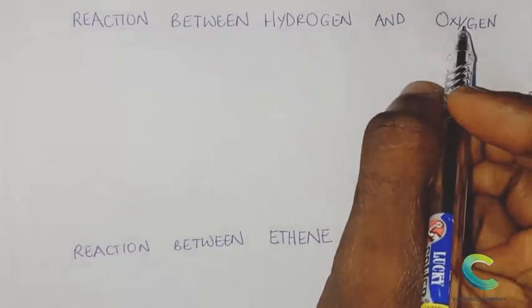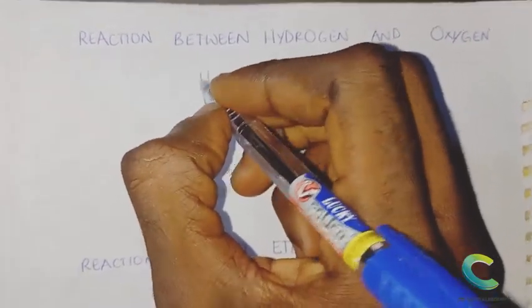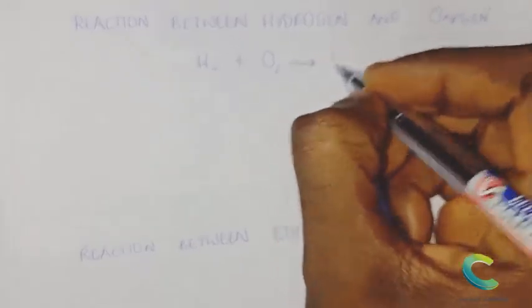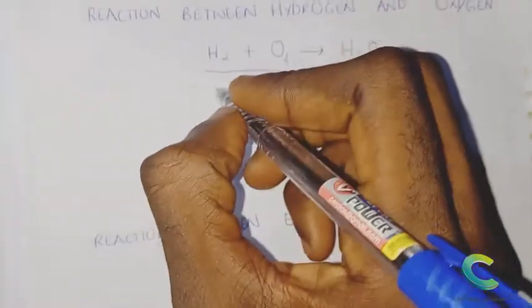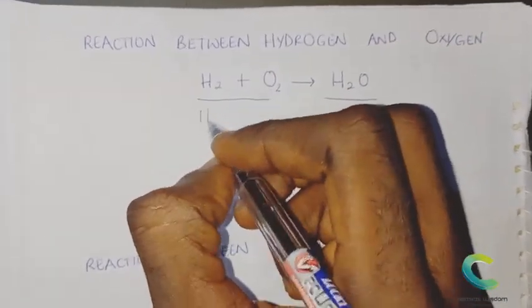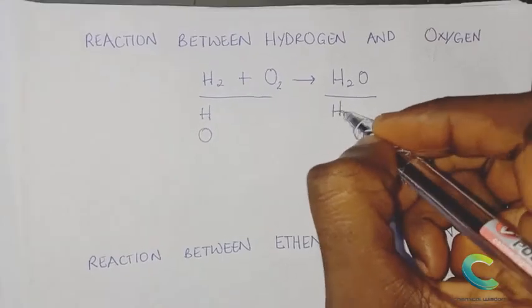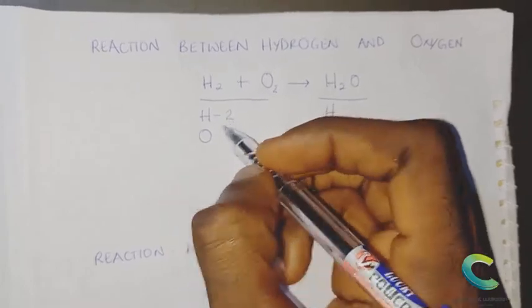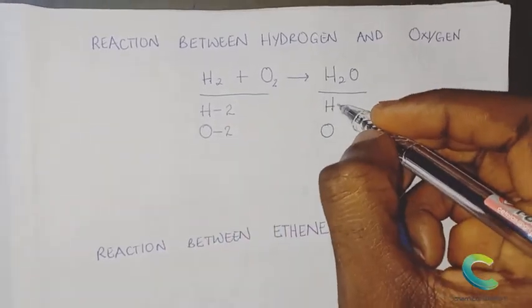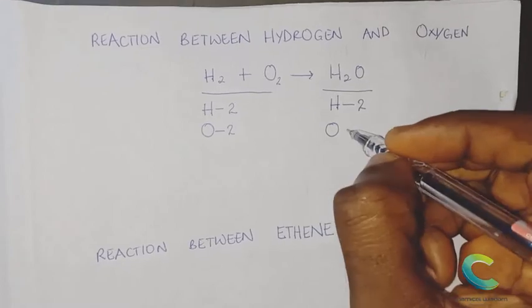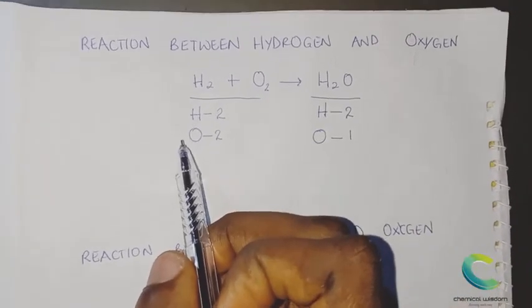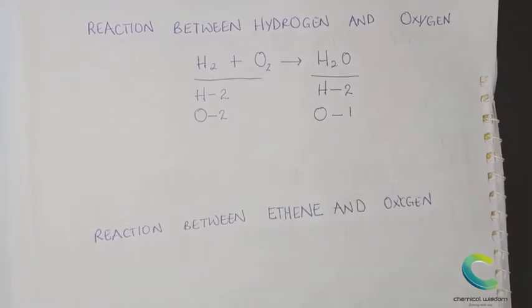The second example is the reaction between hydrogen gas and oxygen to produce water: H₂ + O₂ → H₂O. Step one says list out the atoms on both sides — we have hydrogen and oxygen on the left, and hydrogen and oxygen on the right. Step two says compare both sides: we have two hydrogen atoms and two oxygen atoms on the left, but two hydrogen atoms and only one oxygen atom on the right.